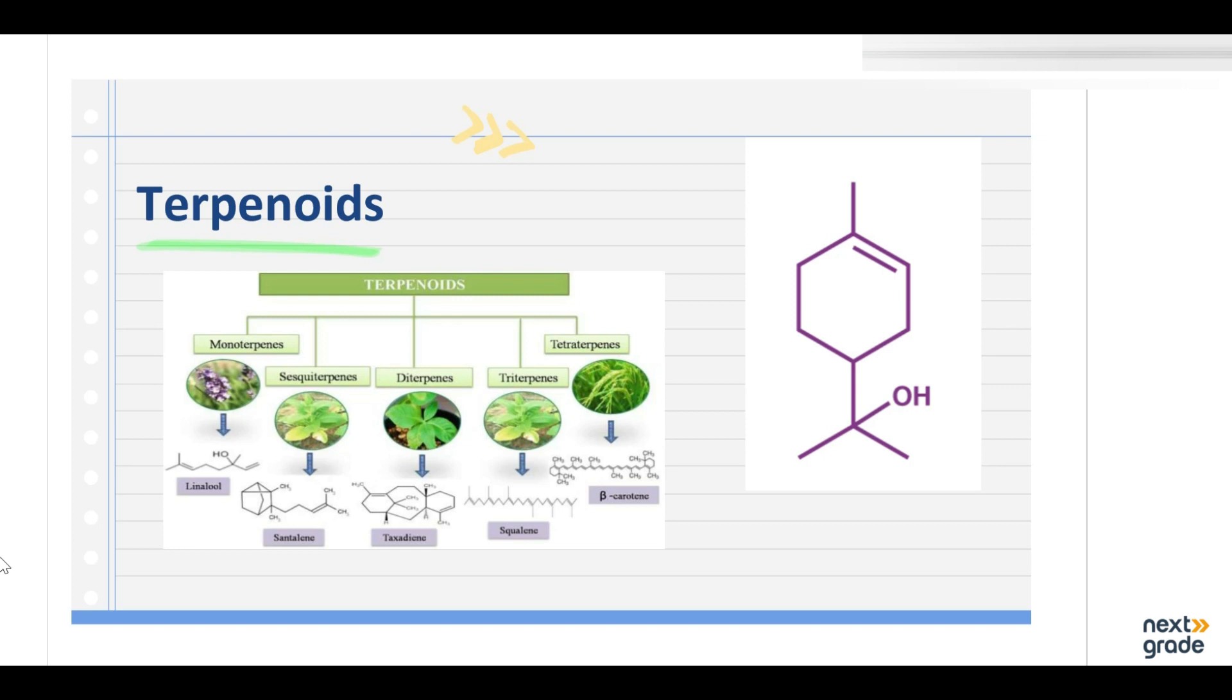Now terpenoids. Terpenoids are basically a very large and important group of compounds, which are made up of simple repeating isoprenoid units. This is a common structure of terpenoids.